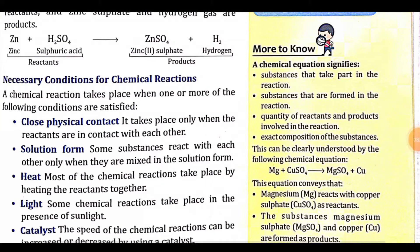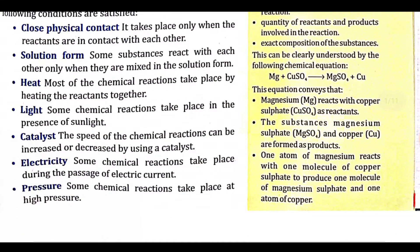This can be clearly understood by the following chemical equation: Mg + CuSO₄ → MgSO₄ + Cu. In this equation, Mg is reacting with copper sulfate so it is the reactant. The substances formed are magnesium sulfate and copper — these are our products. One atom of magnesium reacts with one molecule of copper sulfate to give one molecule of magnesium sulfate and one atom of copper.